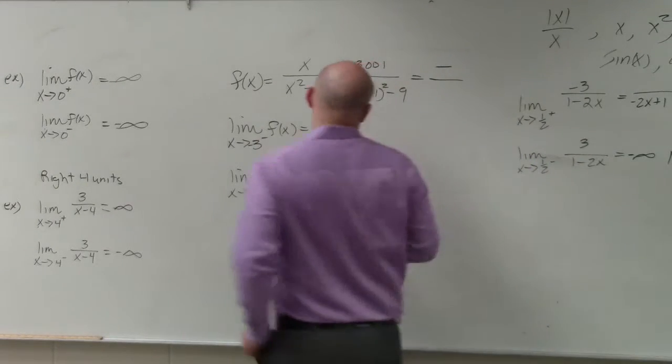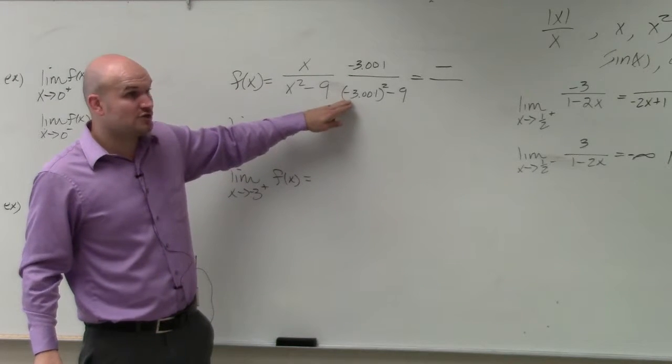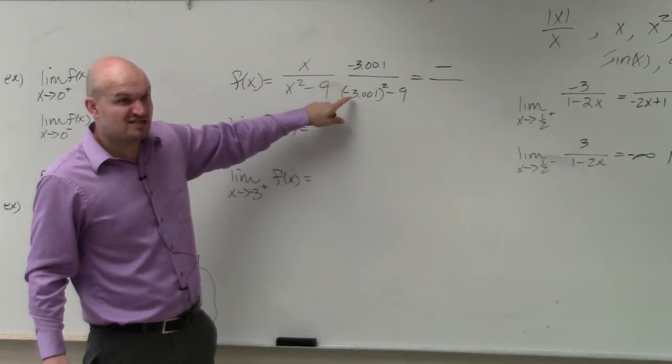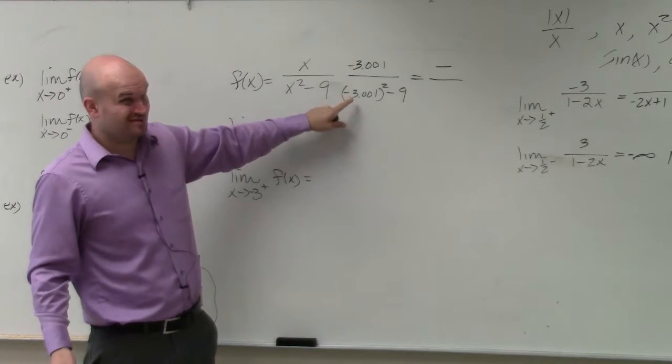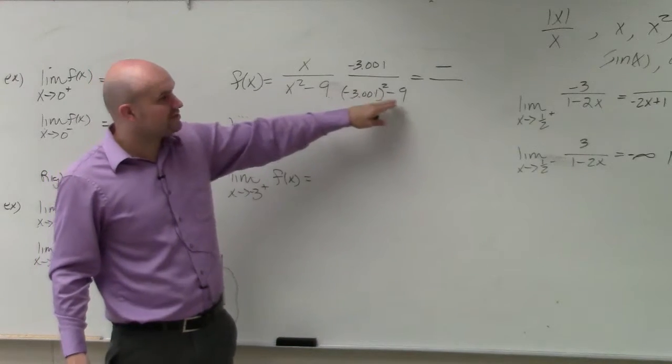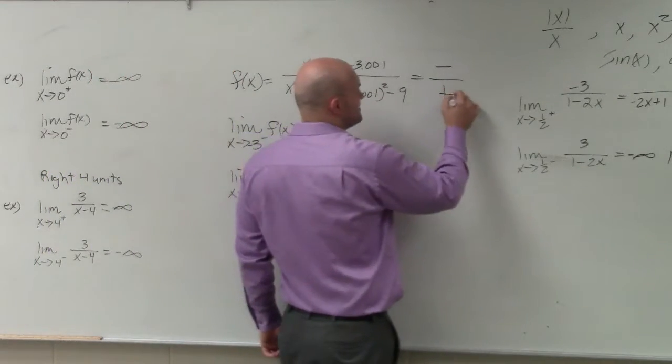In the denominator, if you have a number that's now larger than 3, right? Would you guys agree? This number squared is going to be larger than negative 3 squared. Not by much, but it is. So that's now larger than 3 squared. So then minus 9 is going to give you a positive number.